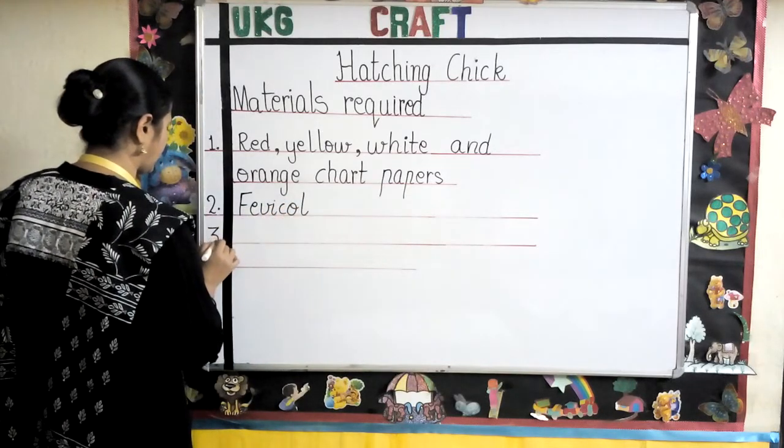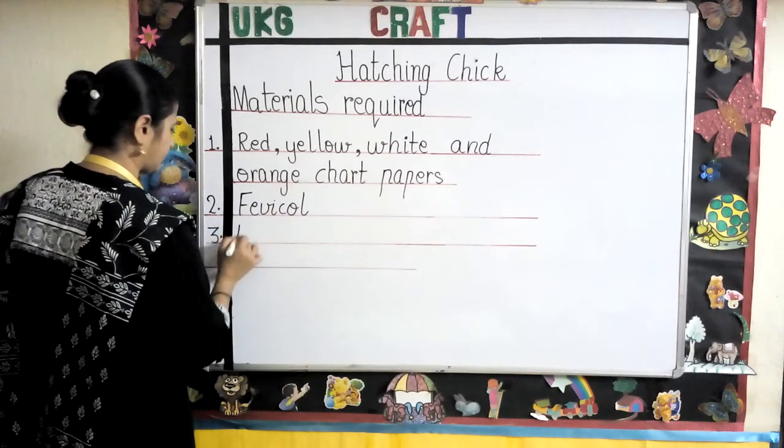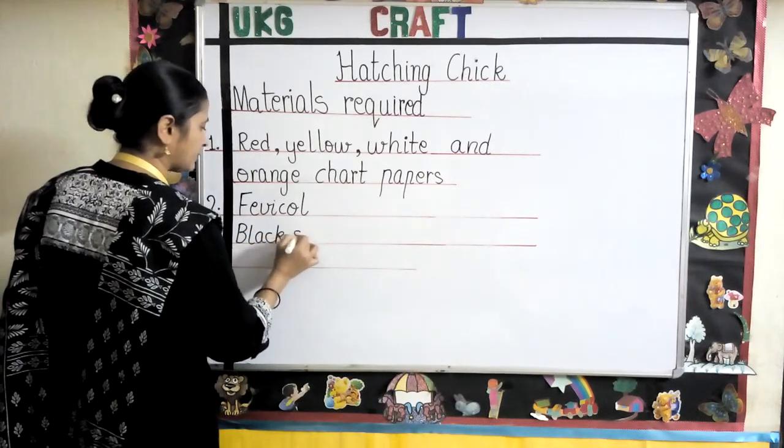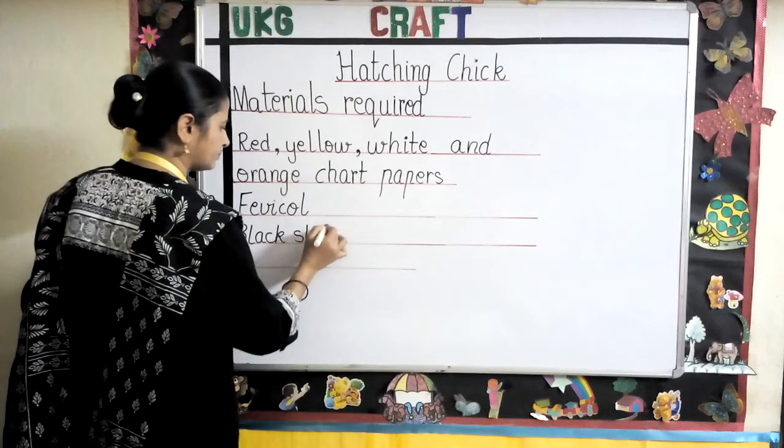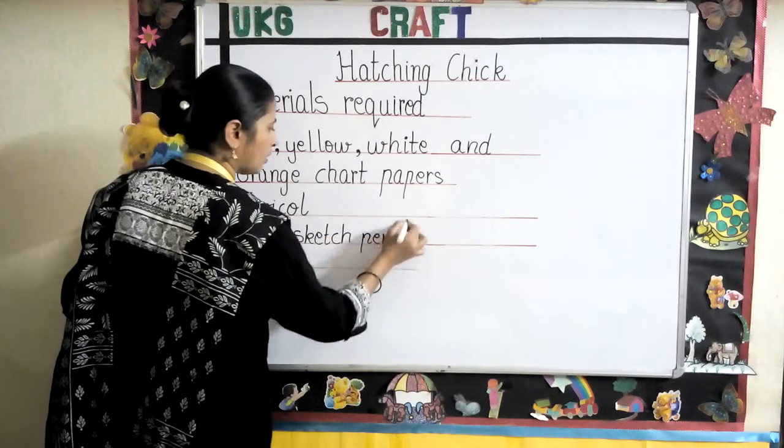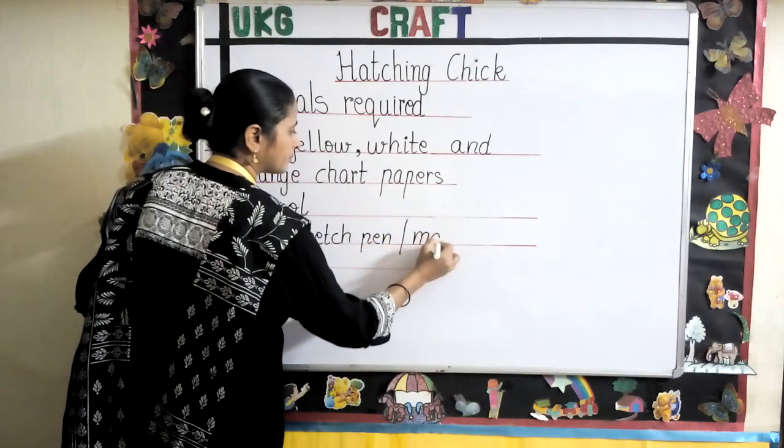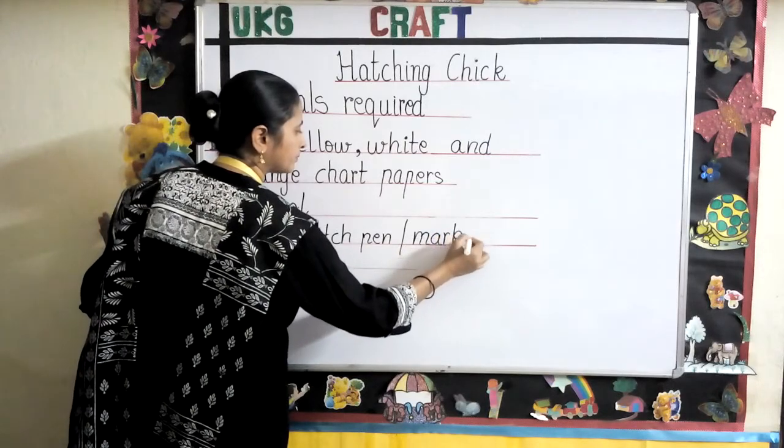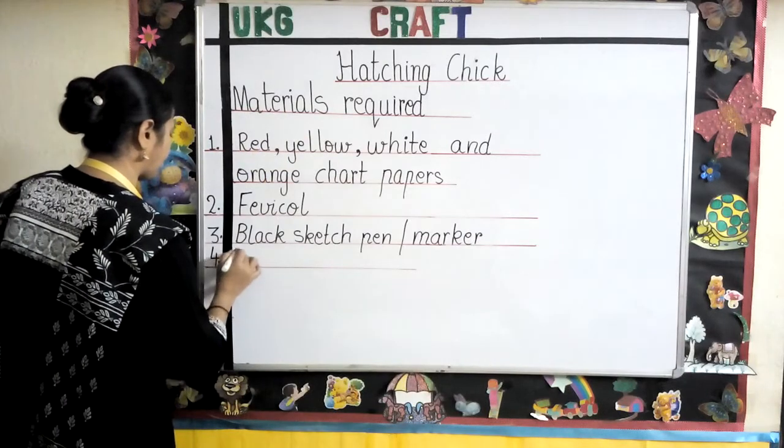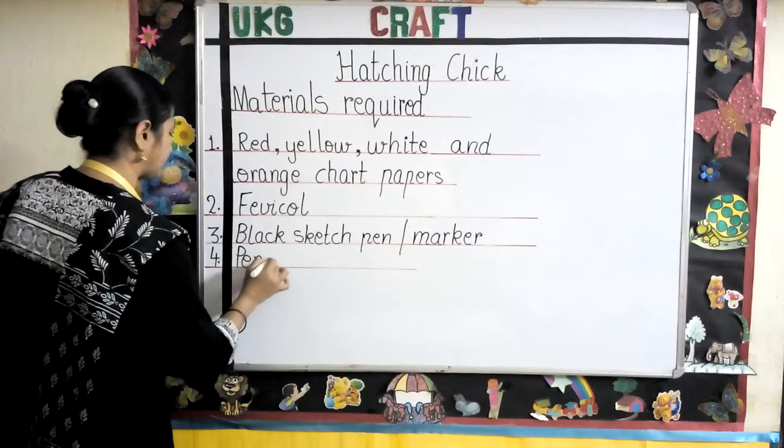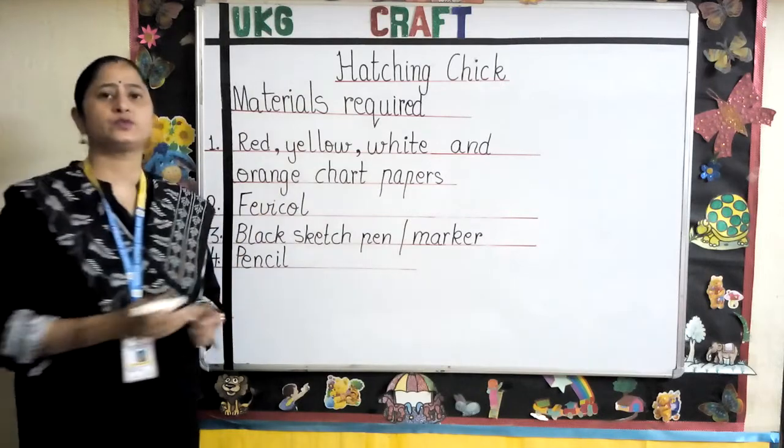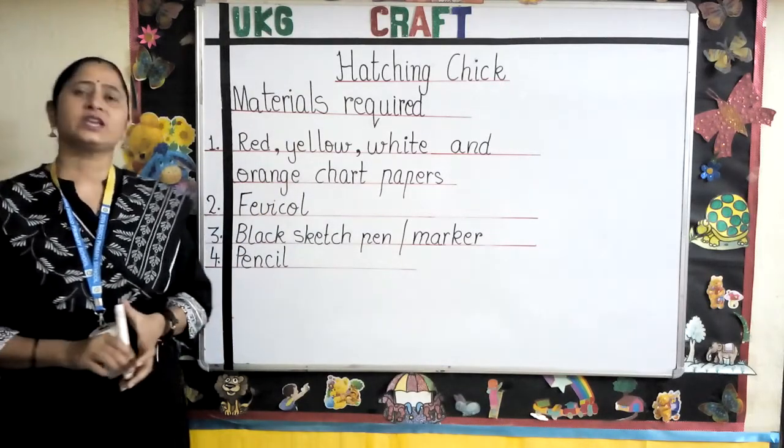Number three: black sketch pen or marker. Number four: pencil. These are the materials which we require for making hatching chick.